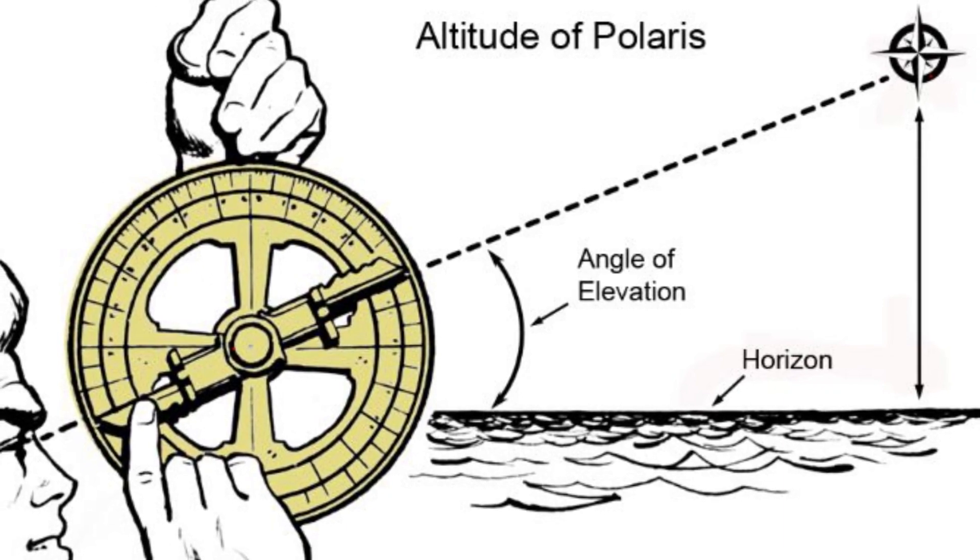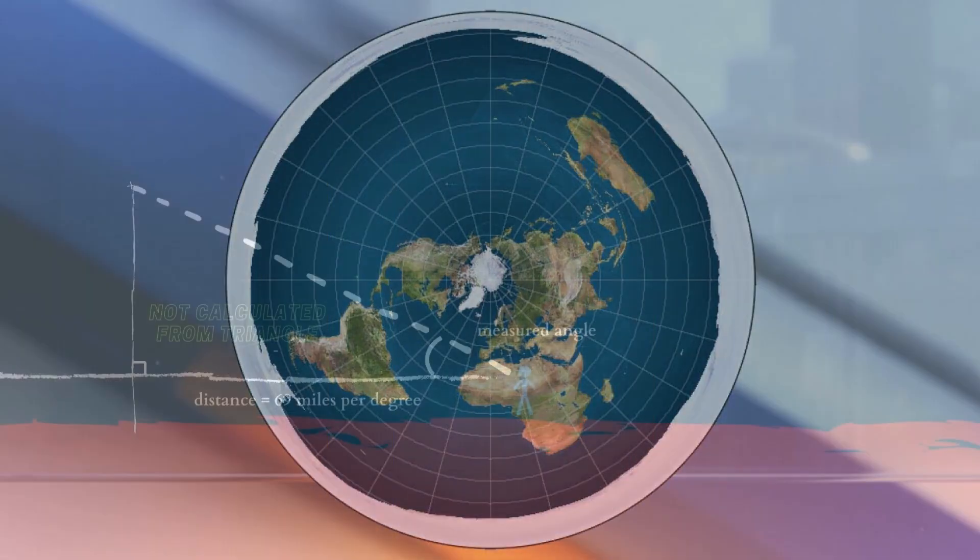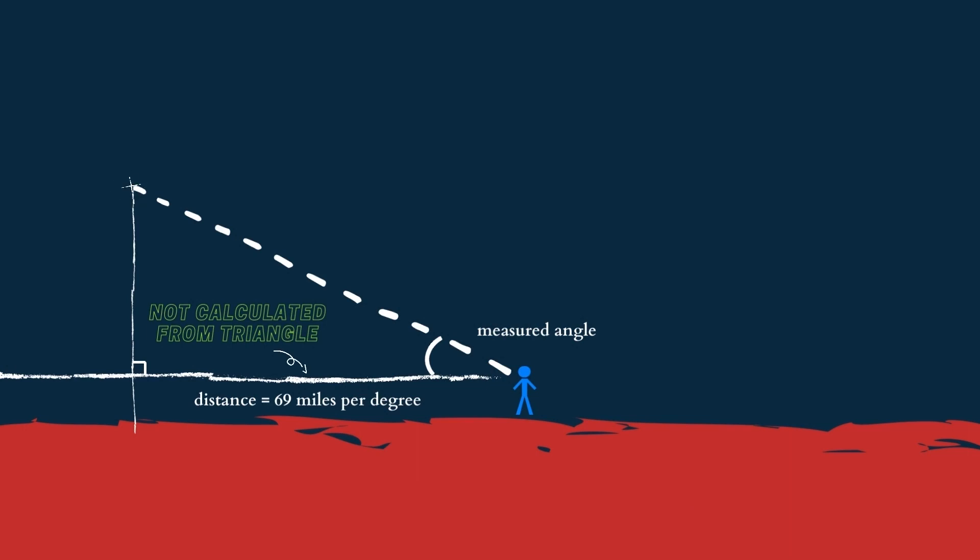Then it's time to use a map to triangulate our position. Oh right, hold up. We need to apply a right angle triangle with the angle and distance measurement, because that is a requirement on a flat earth.